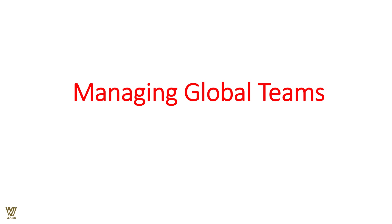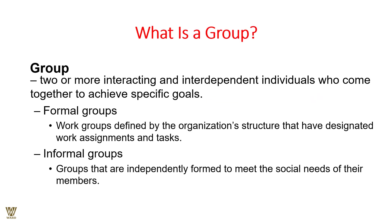Welcome everyone. Today we'll talk about managing global teams — what exactly are the hindrance possibilities and dimensions of managing a global team. First and foremost, we need to understand what a group is. A group is nothing but two or more interacting individuals who are mutually dependent upon each other to come to a common goal. We may have two kinds of groups: the formal group, where the goal is stated, and the informal group, where the goal gets assimilated into the system over time.